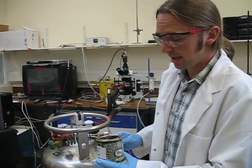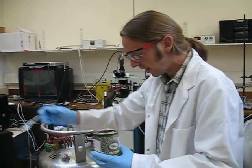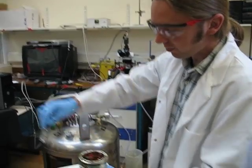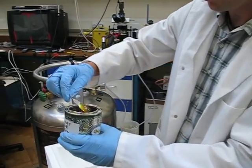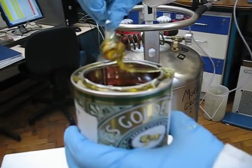We're going to try to demonstrate glass formation using golden syrup and liquid nitrogen. What we have here is golden syrup, which is a liquid, a viscous liquid.